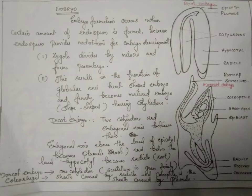In the dicot embryo, there are two cotyledons and an embryonal axis between them. The part of the embryonal axis above the level of the cotyledon is the epicotyl, which becomes the plumule, and this plumule gives rise to the shoot system. The part of the embryonal axis below the level of the cotyledon is called the hypocotyl, which becomes the radicle or root.